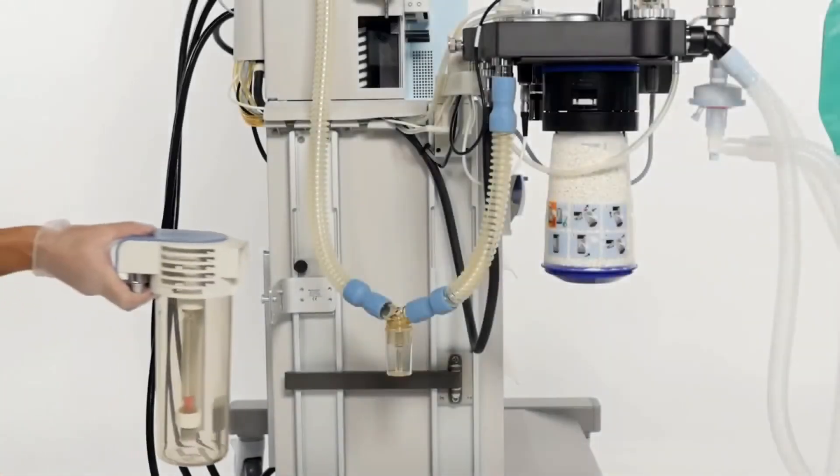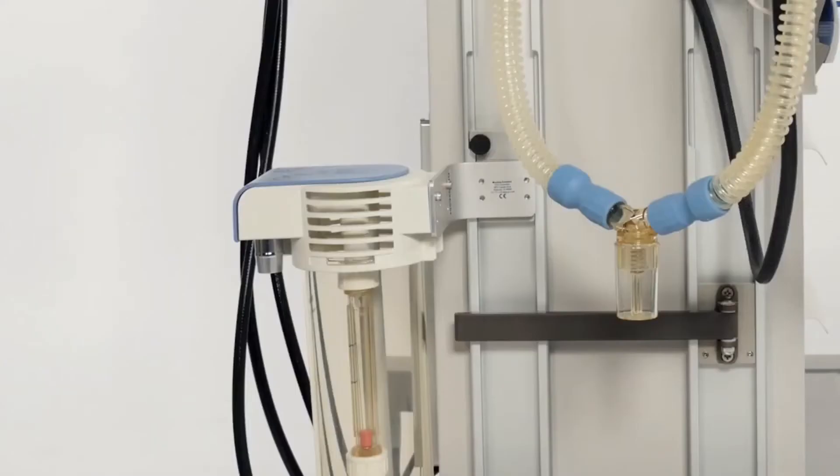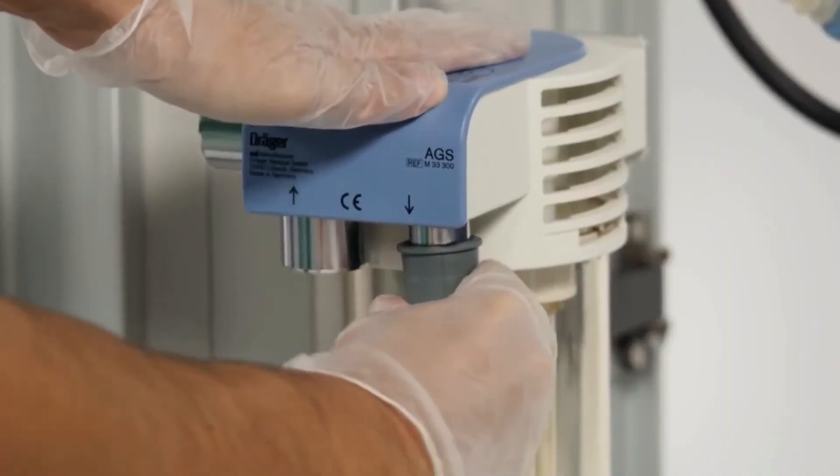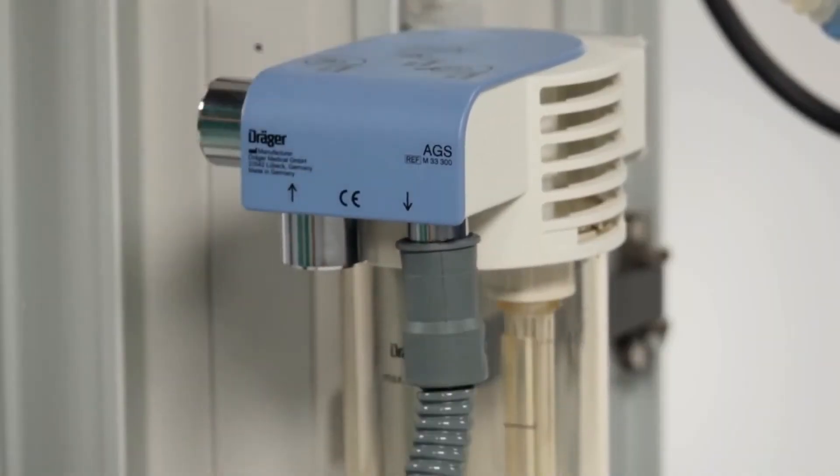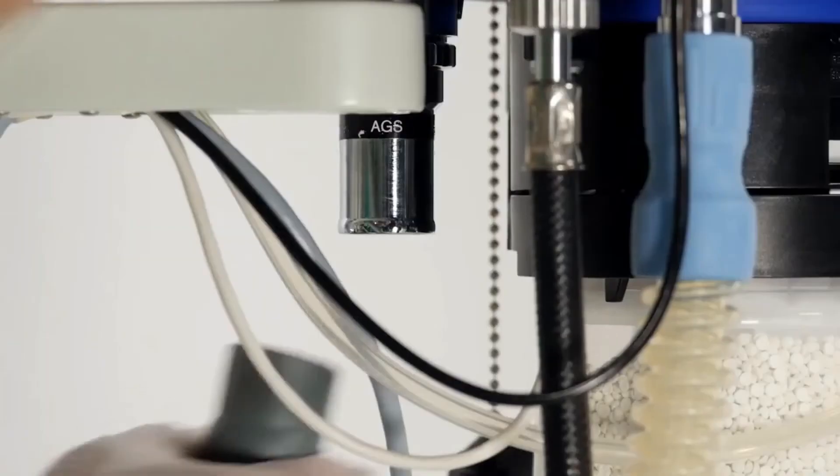For the assembly of the anaesthetic gas scavenging system, hook the receiving system into place on the rear side of the Fabius. Connect the scavenging hose from the receiving system to the central disposal system. Then connect the transfer hose between the breathing system and the receiving unit.